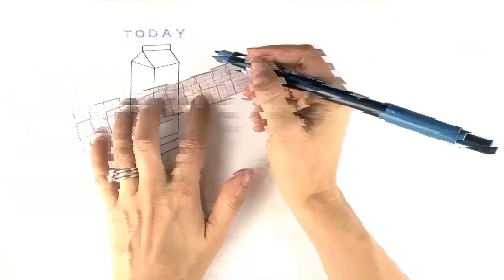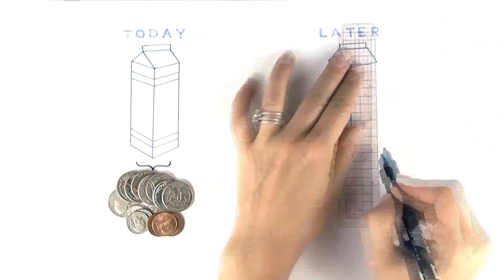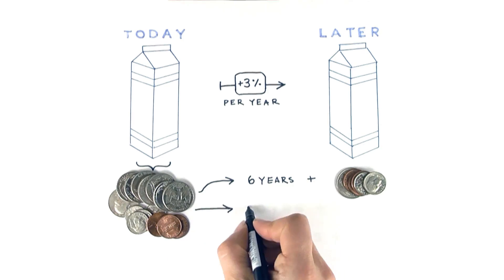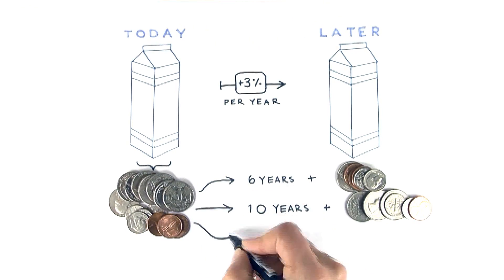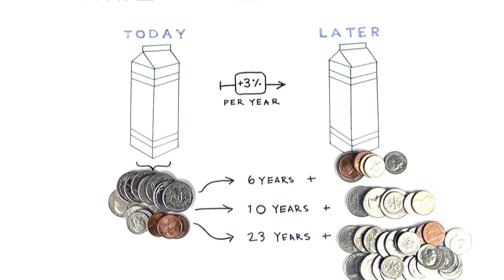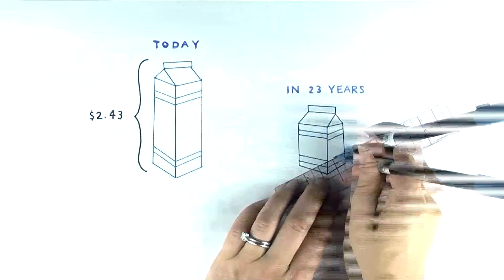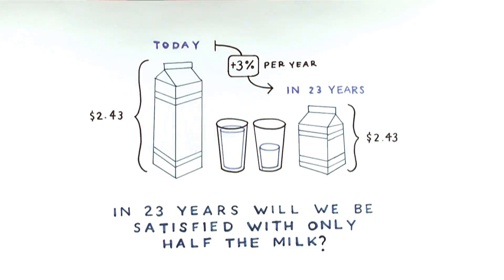That 3% decrease in buying power per year means that in six years the same amount of milk will cost 20% more. And in 10 years the cost will rise 40% when compared with today. In just over 23 years you'll need twice as much money to buy the same amount of milk as you do today, or you'll be stuck buying half as much. Do you think in 23 years we'll be satisfied with half the milk? Not likely.